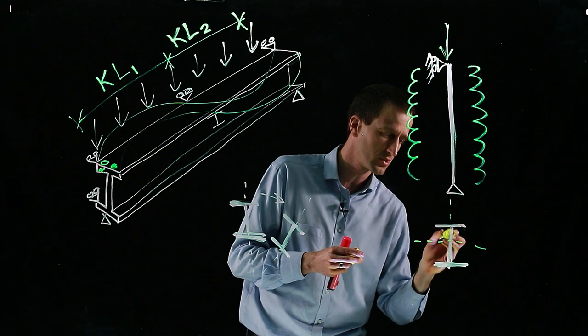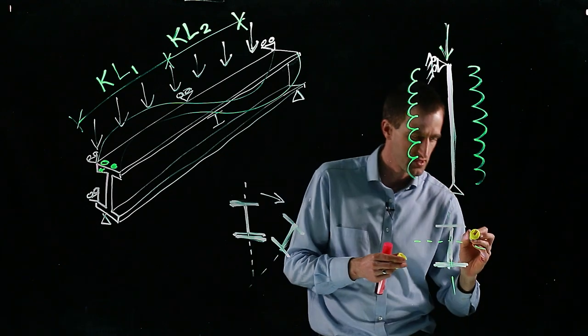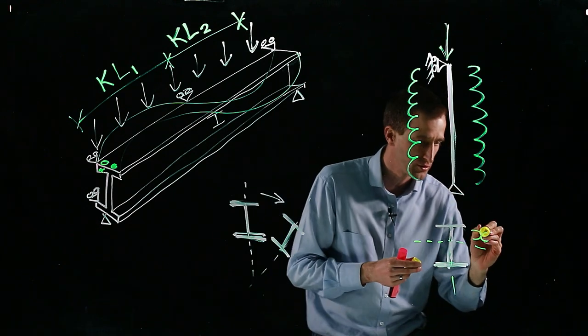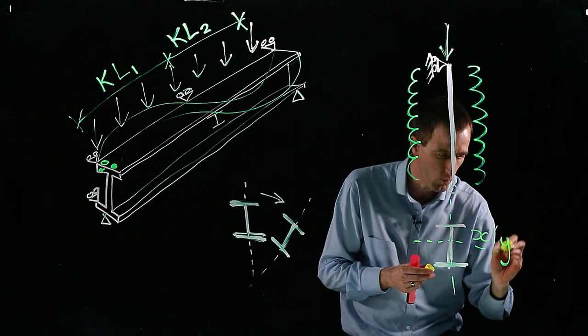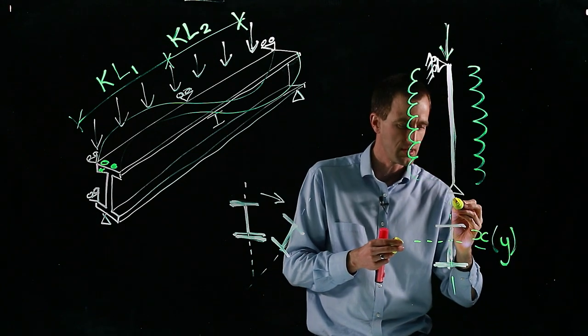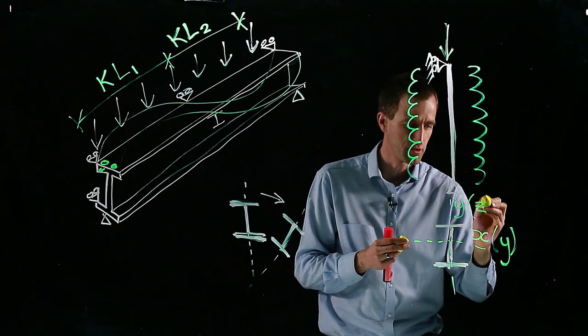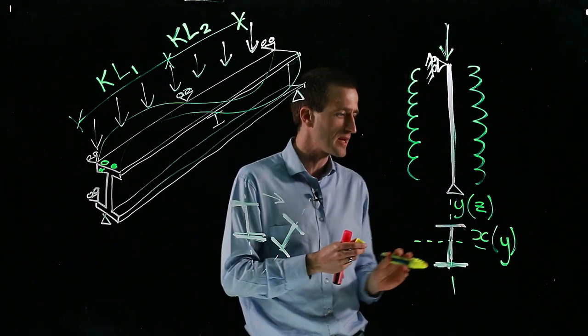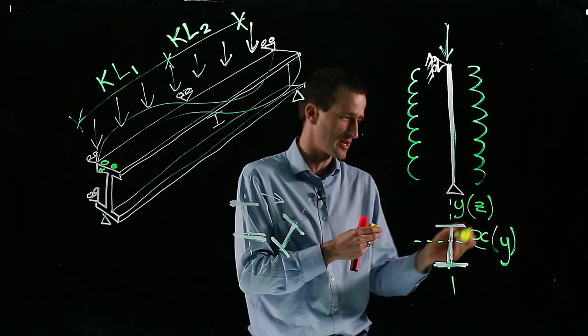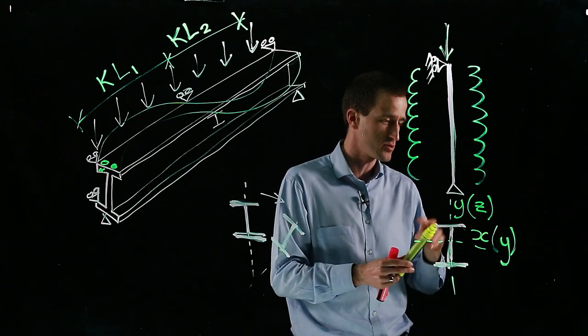So if this is a cross section through the column, this is my x-axis. In the Eurocode, this is referred to as the y-axis. And then the y-axis, which once again in the Eurocode is referred to as z. So it depends on which country—in South Africa, we use x and y, but Eurocode and others use y and z.